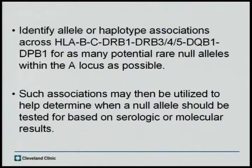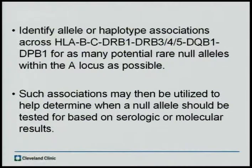The purpose of this study was to try and identify as many allele or haplotype associations across the HLA for as many potential rare null alleles within the A locus as possible. Because, as stated, these exons or regions of DNA used to identify those base insertions had previously been uninvestigated, so we are not entirely certain if they existed. If we develop associations between rare null alleles and other components of the HLA, we can then determine when we need to test for these null alleles.